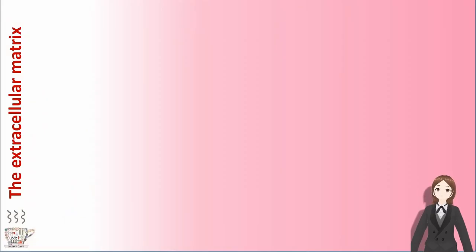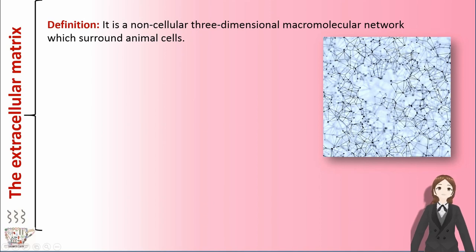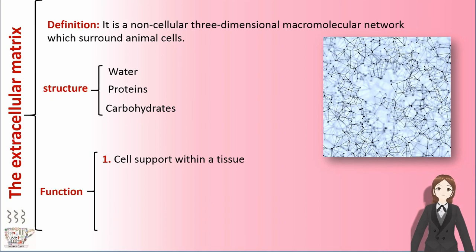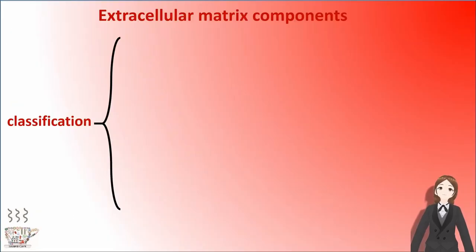The extracellular matrix is a non-cellular, three-dimensional macromolecular network which surrounds all cells. It has water, proteins, and carbohydrates in its structure. It plays roles in cell support within a tissue, regulation of intercellular adhesion and communication, and control of cell migration. Extracellular matrix components can be divided into three subgroups.